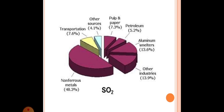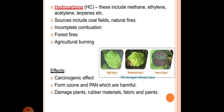Hydrocarbons: These include methane, ethylene, acetylene, terpenes, etc. Sources include coal fields, natural fires, incomplete combustion, forest fires, agricultural burning. Effects are carcinogenic, form ozone and PAN which are harmful, damage plants, rubber materials, fabric and plants. Light injury, moderate injury, half injury, PAN damage, milkweed leaves as shown in the figure.